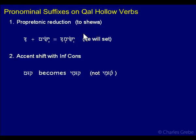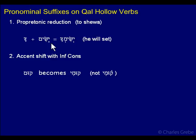The first is that you get preprotonic reduction when you add a pronominal suffix to an imperfect. What does that mean? Here we have yassim, so this is the imperfect 3ms form, and if you add a -cha to it — the 2ms pronominal suffix — then the qamets reduces to a shewa.